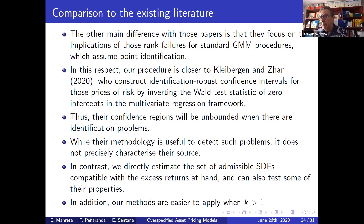The closest procedure to ours is a paper by Kleibergen and Zhan, who use identification-robust confidence intervals for prices of risk by inverting Wald test statistics. If there are identification problems, the confidence regions will be unbounded, highlighting problems with the approach. But it doesn't really characterize the set of admissible stochastic discount factors compatible with the assets at hand.